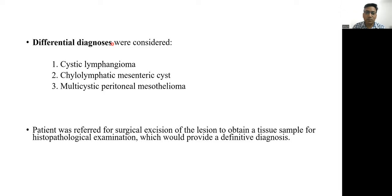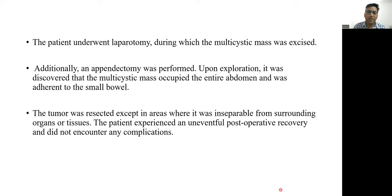The differential diagnoses considered were cystic lymphangioma, chylolymphatic mesenteric cysts, and multicystic peritoneal mesothelioma. The patient was referred for surgical excision of the mass to obtain a tissue sample for histopathological examination to provide a definitive diagnosis. The patient underwent laparotomy during which the multicystic mass was excised, and an appendectomy was also performed. Upon exploration, the multicystic mass occupied the entire abdomen and was adherent to the small bowel. The tumor was resected except in areas where it was inseparable from surrounding organs and tissues. The patient experienced an uneventful postoperative recovery with no complications.